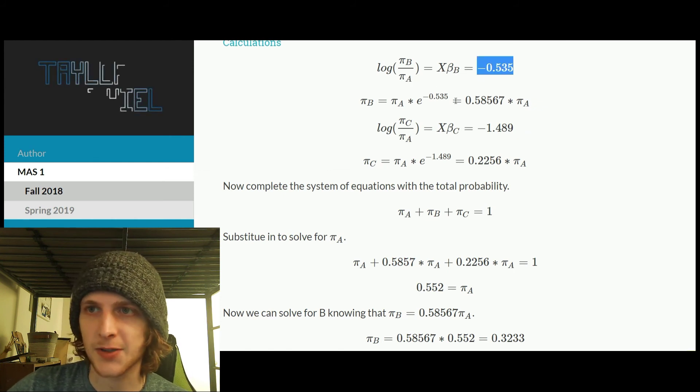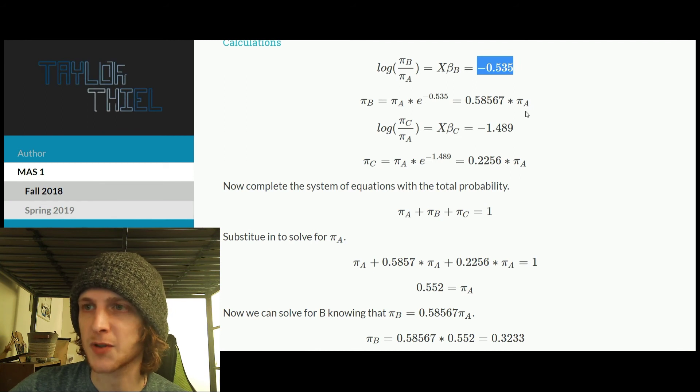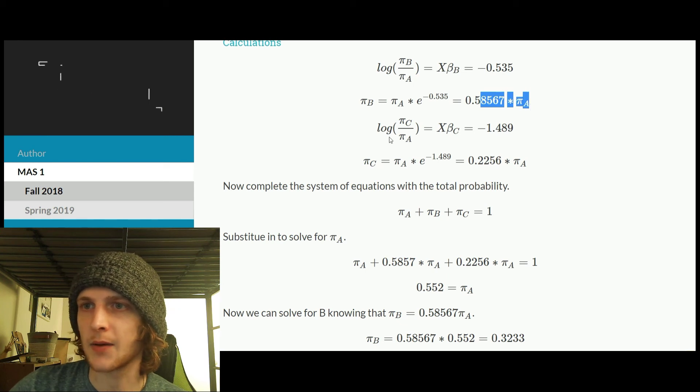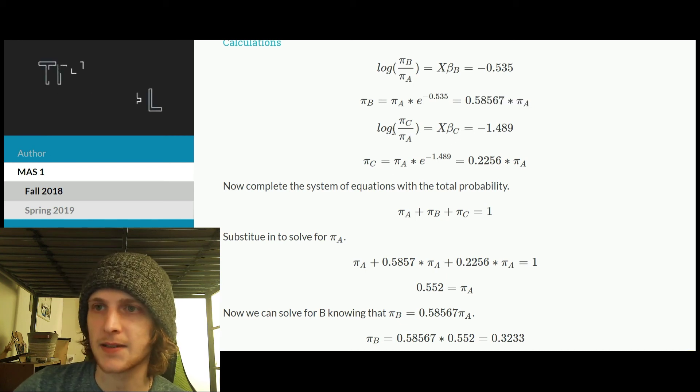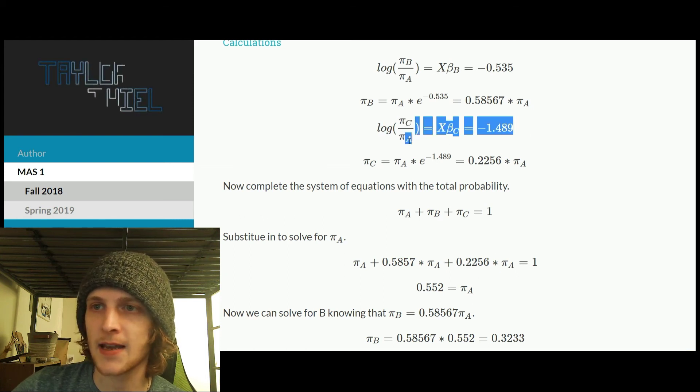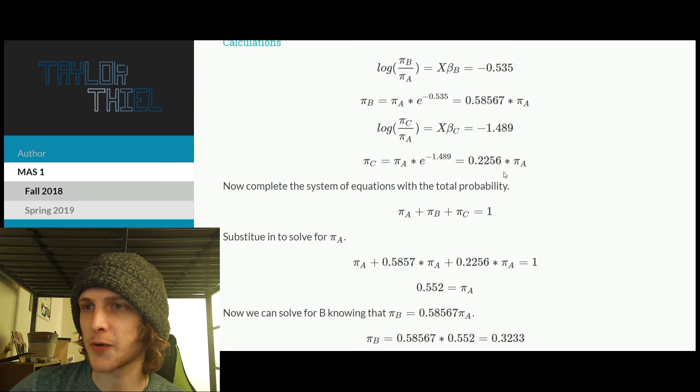So what we have here is the log odds of B relative to A is equal to negative 535. We then exponentiate both sides and then multiply both sides by the probability of A to get to this point. And then likewise, we do the same thing for C. So this is the value we have for the log odds of C relative to A. Exponentiate both sides and we get another equation here.